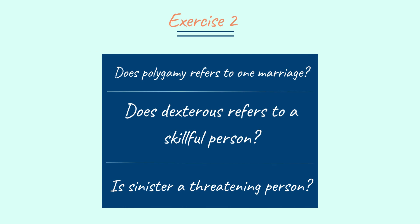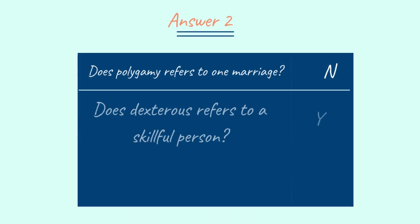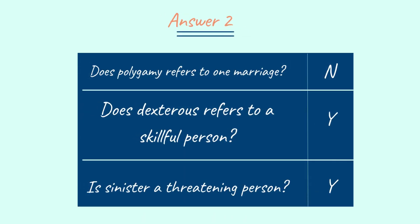Now let's look into the next exercise. In this exercise, you need to say whether the statement is yes or no. The questions are on your screen. Pause the video and solve. The answers: Does polygamy refer to one marriage? No, it refers to more than one marriage. Does dexterous refer to a skillful person? Yes, dexterous means a skillful person. Is sinister a threatening person? Yes, sinister is a threatening person.